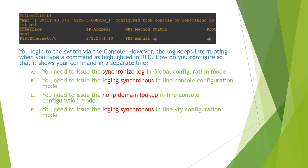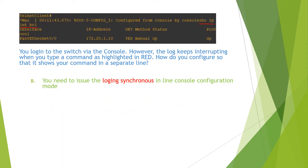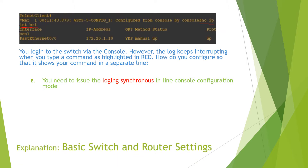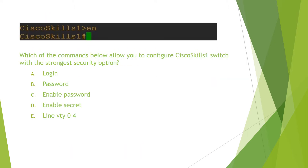In order to configure the switch to show your command on a separate line via the console, you need to issue the command `logging synchronous` in the line console configuration mode. Therefore, the answer for this question is B. You can find the detailed explanation in the video 'Basic Switch and Router Settings.'